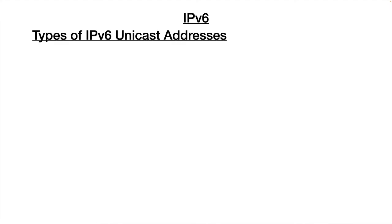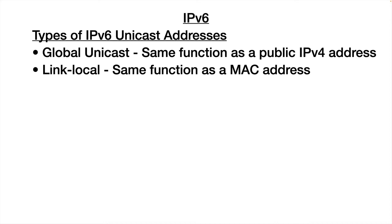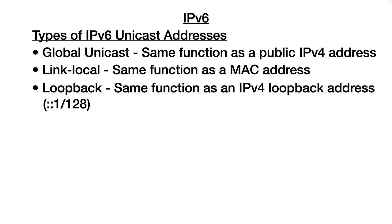Looking at unicast addresses, there are actually five different types. We have a global unicast, which is analogous to a public IP address in IP version 4. We have link local, which performs the same function as a MAC address does in IP version 4. The next one is loopback — same function as in IP version 4, testing the local device. The packet goes through the local TCP/IP stack, doesn't go out on the network and comes back, testing the software and protocol stack on the local machine.